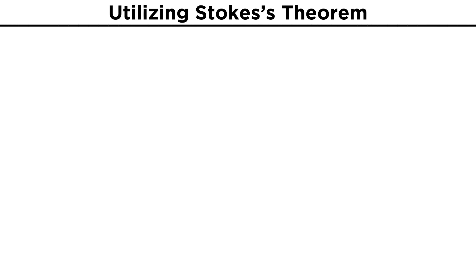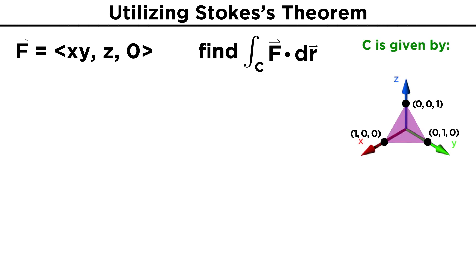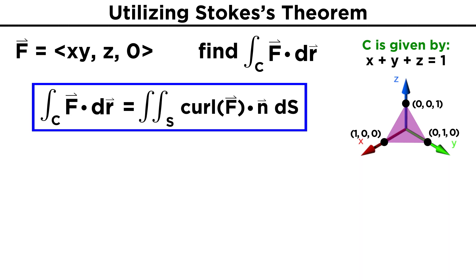Now let's look at an example. Let's say we have a vector field F equals (XY, Z, 0), and we want to find the line integral of F over C, where our curve C is given by the triangle that forms when we connect the points (1,0,0), (0,1,0), and (0,0,1). These points define the plane X plus Y plus Z equals one, which will be useful information in our calculation. Using Stokes' Theorem, we will calculate the line integral as the surface integral of the curl of F dot the normal vector of our plane's surface.